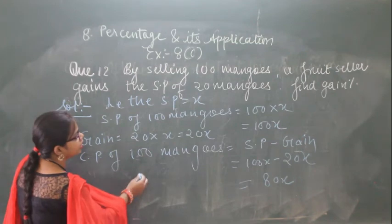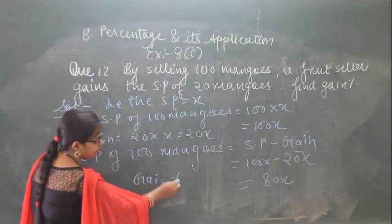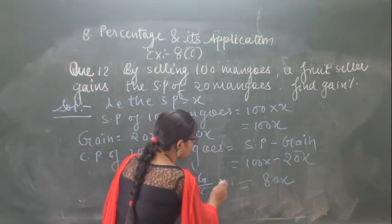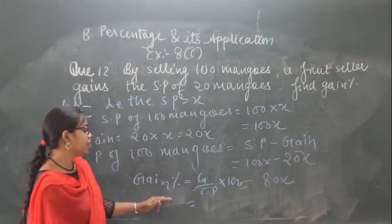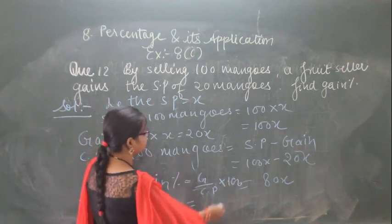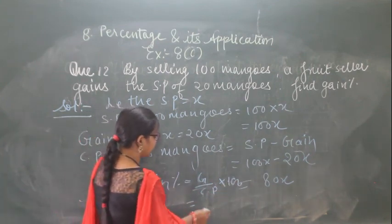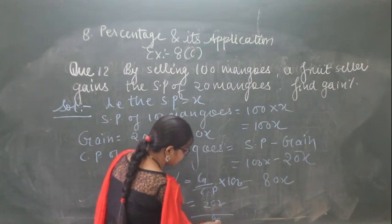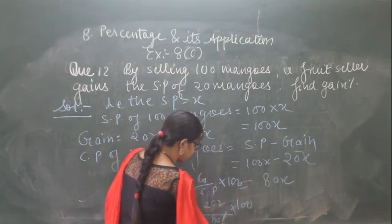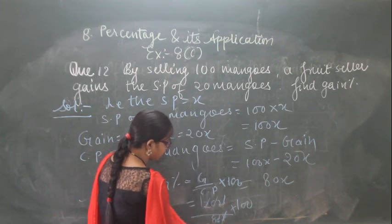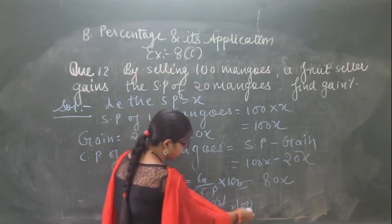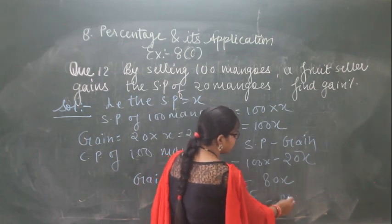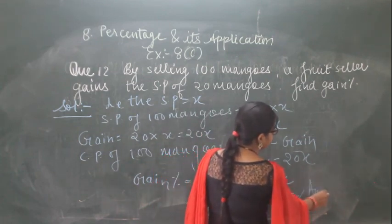We have to find out the gain percent. The formula is gain upon cost price into 100. Gain is 20x, cost price is 80x into 100. The x and x cancel. Simplifying 20 upon 80 into 100 gives 25. So the gain percent is 25%.